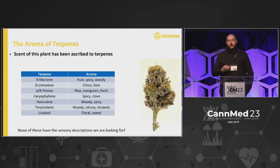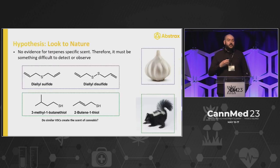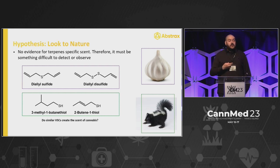Traditionally, the scent of cannabis has been attributed to terpenes. Beta-myrcene is fuel-like, spicy, and woody; limonene is citrusy and lemon-limey; linalool is floral and sweet. But none of these have sensory descriptors of skunky or gassy. So we looked to nature for inspiration. Since terpenes don't give that specific scent, it has to be something else. We looked at botanicals like garlic, durian fruit, and onions, as well as animal species like skunks — their pungent aromas come from volatile sulfur compounds. This led us to believe cannabis's pungent, skunky, gassy aromas are also coming from sulfuric compounds.